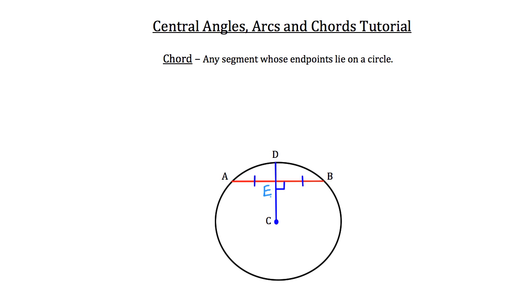So remember that — a radius can intersect a chord and not do so perpendicularly, but if it does so at any other angle other than 90 degrees, it's not going to be bisecting that chord. If it does bisect the chord, then it's intersecting at 90 degrees.